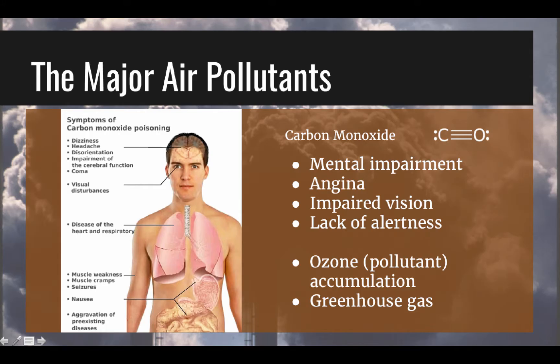Carbon monoxide, CO, is a poisonous gas that leads to mental impairment, angina, impaired senses, and accumulation of ozone, and it also behaves as a greenhouse gas. Carbon monoxide results mostly from natural processes, but humans contribute a large amount, mostly via incomplete fuel combustion and motor vehicle exhaust. Other man-made sources include non-road vehicles and construction equipment, wood stoves, incinerators, and industrial processes.